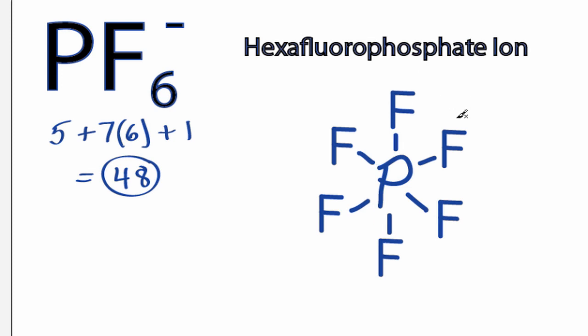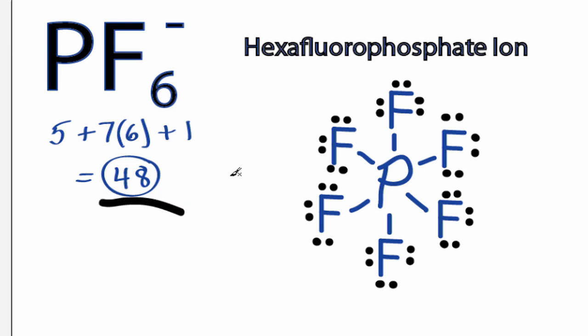So we've used 12 valence electrons, then completing the octets of the fluorines. So we have 12, 14, 16, and 48. So we've used all 48 valence electrons for the PF6 minus Lewis structure.